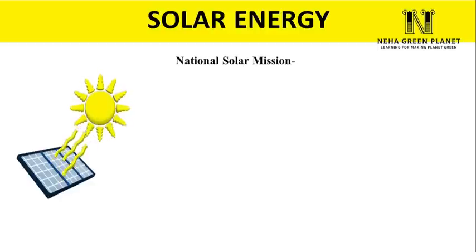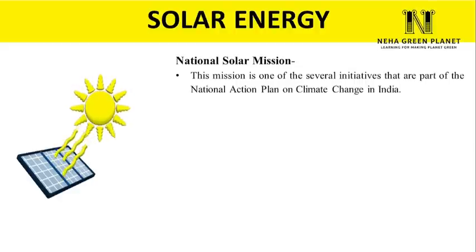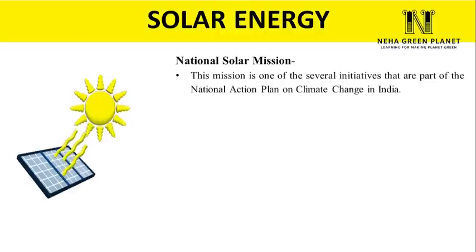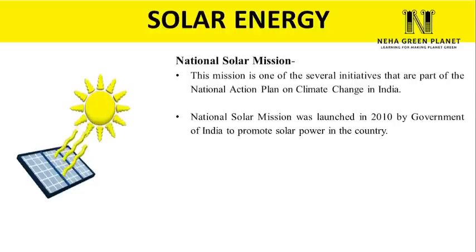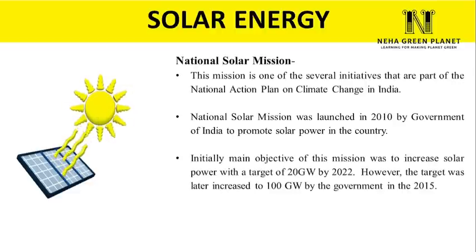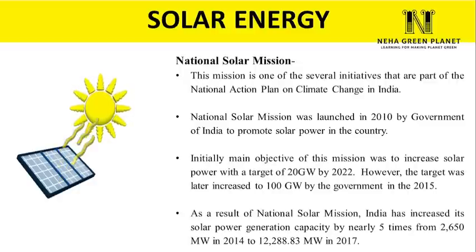Countries like India have initiated missions like the National Solar Mission, part of India's National Action Plan on Climate Change. Launched in 2010, the mission initially aimed to increase solar power to 20 gigawatts by 2022, but the target was later increased to 100 gigawatts. As a result, India has continuously increased its solar power generation capacity by nearly five times.